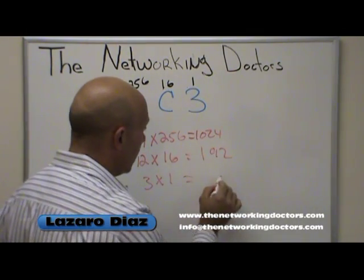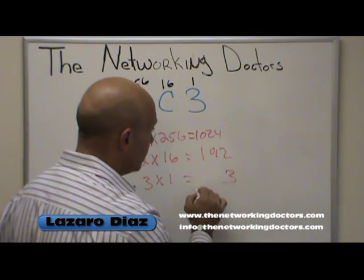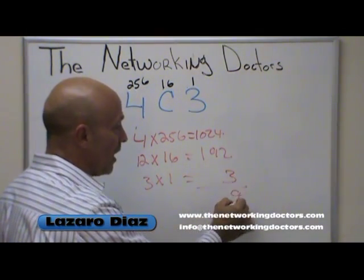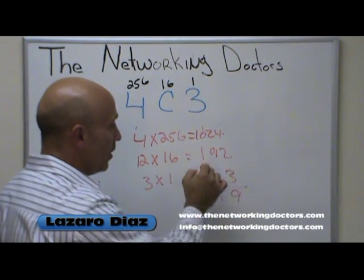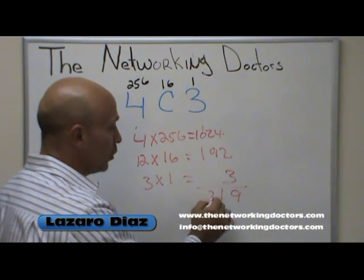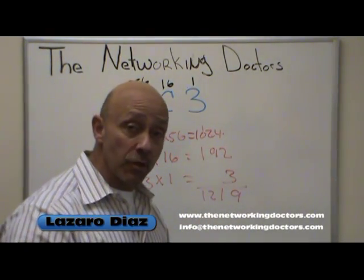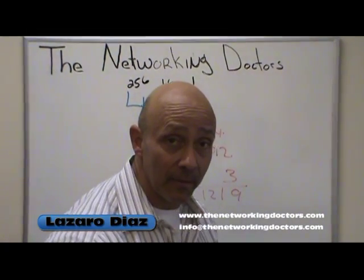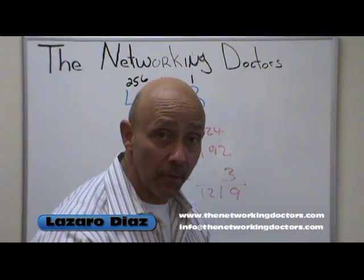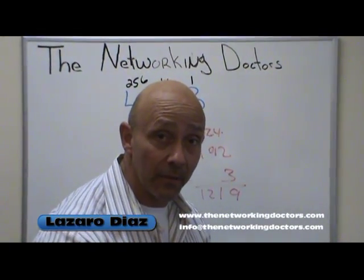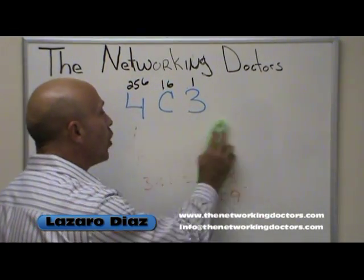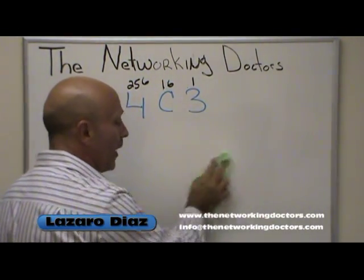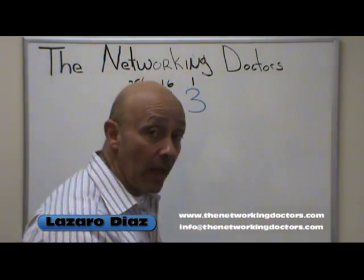Adding it up: 1024 plus 192 plus 3 equals 1219. That's the correct answer, but you don't have the right to use a calculator at a Prometric center. So I'm going to show you a different, quick way — no need for a calculator, as long as you know how to add.